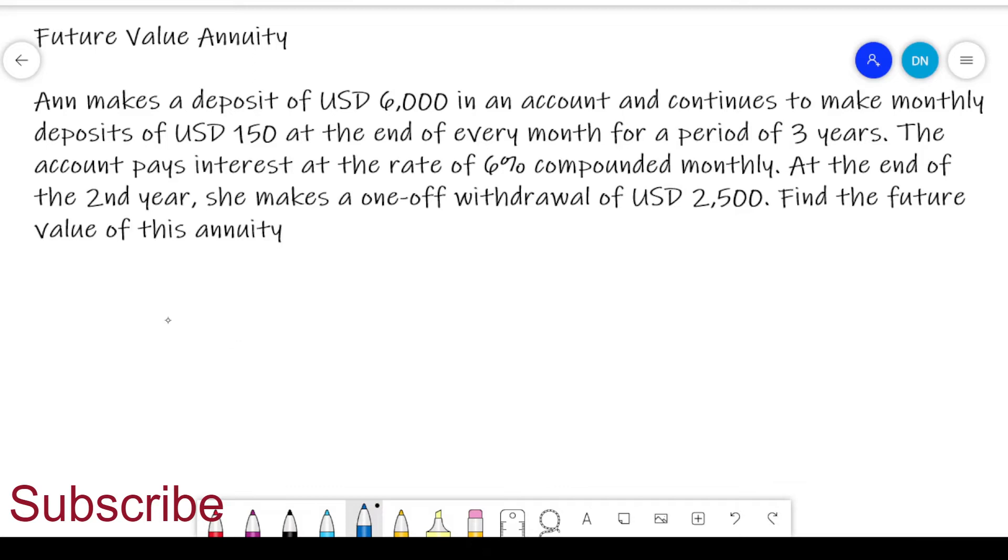Our first step is to have a description of what Anne was doing with her account. We are told that at the beginning, she made a deposit of $6,000. And then at the end of every month, she would put in $150. She would do that for a period of time, and then she came at one point and she had to withdraw $2,500.